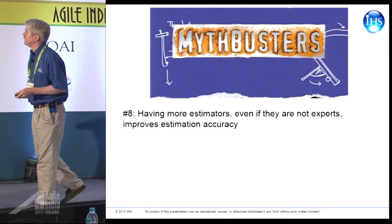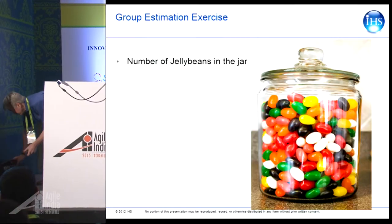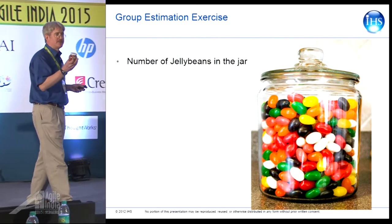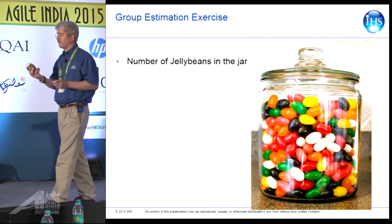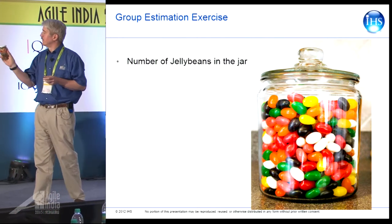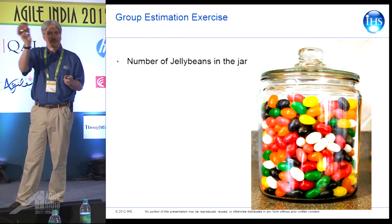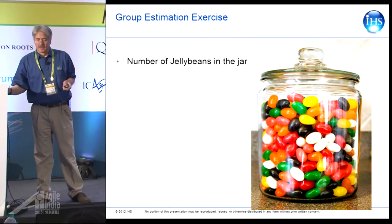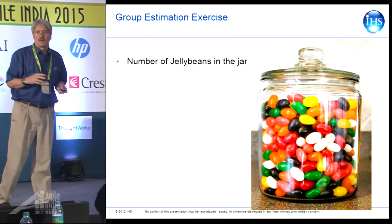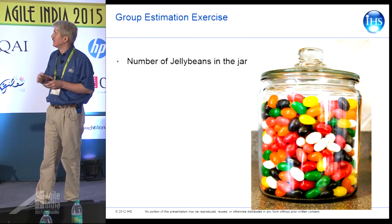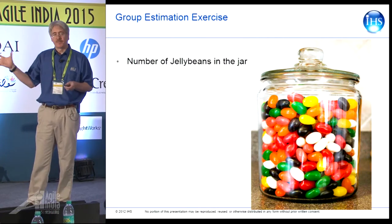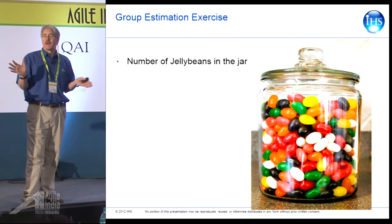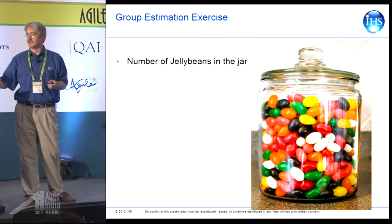Myth eight: having more estimators, even if they're not experts, improves estimation accuracy. This is an exercise I've done, and I'll be doing a game tomorrow with an estimation exercise of jelly beans in a jar. One unexpected consequence when I started doing it is realizing how bad we are at estimating even something as simple as jelly beans. How bad? If you look at the range between the 90th and 10th percentile, it's a ratio of 6 to 1 between the high and the low — consistently, in groups from 20 to 100 people.